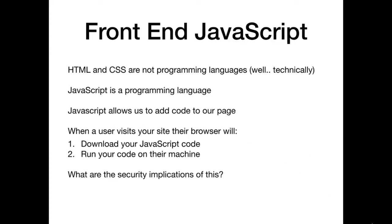JavaScript is a full programming language. You can declare variables, have loops, control flow, write functions — you can do anything you would expect to be able to do, with a few notable exceptions we'll see on the next slide.